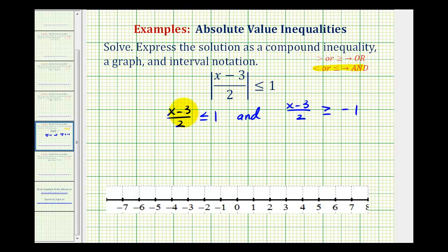So to isolate x, we'll first undo this division. Remember, a fraction bar means division. So we're going to multiply both sides by positive two. You can think of this as positive two over one. So these two's simplify out and we're left with x minus three is less than or equal to positive two. And then we'll add three to both sides. So here we have x is less than or equal to five.